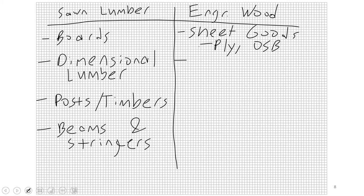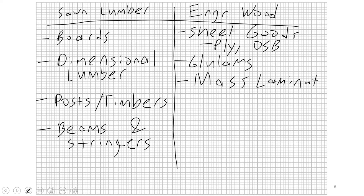You also have things like glue laminated timber, or glue lams — glue lam beams, glue lam columns, and so on. Then there are mass laminated or mass timber products, such as CLT (cross laminated timber) and mass plywood panels — any sort of thing where you're taking large pieces of sawn lumber like 2x4s and laminating them together into a large construction. That's the general broad category of wood and lumber products.